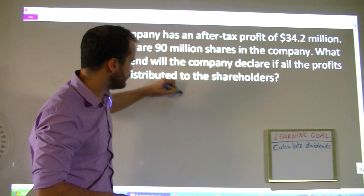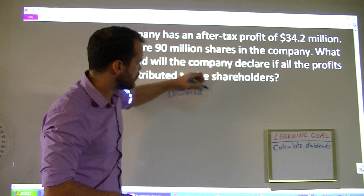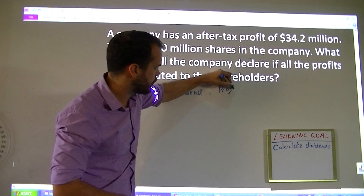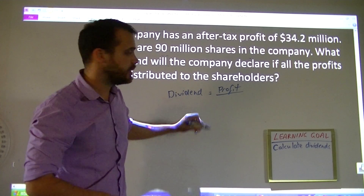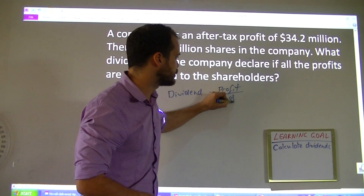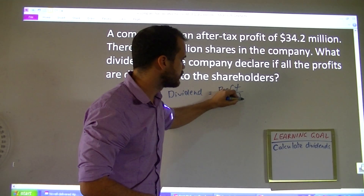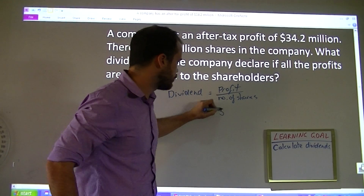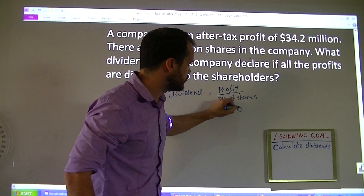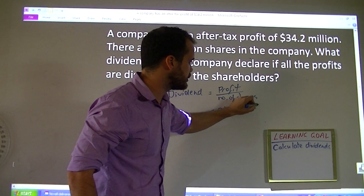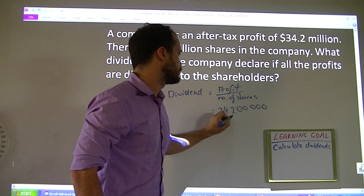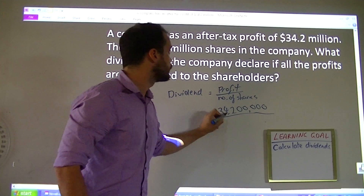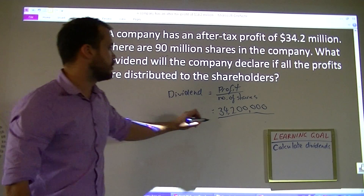The dividend will be the profit they make divided by the number of shares. In this question, it's going to be 34.2 million — so 34,200,000 — divided by 90 million. Be careful with your zeros.